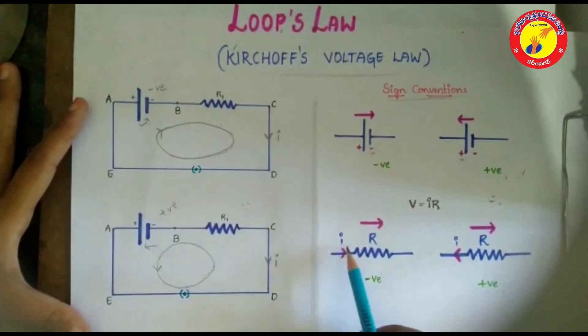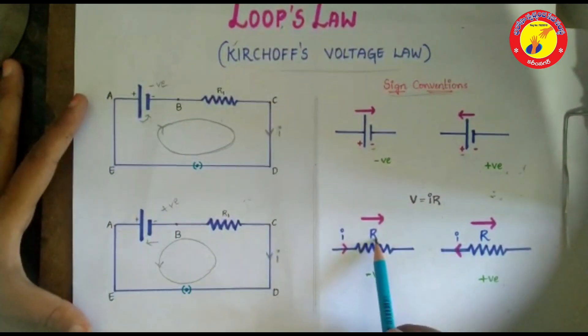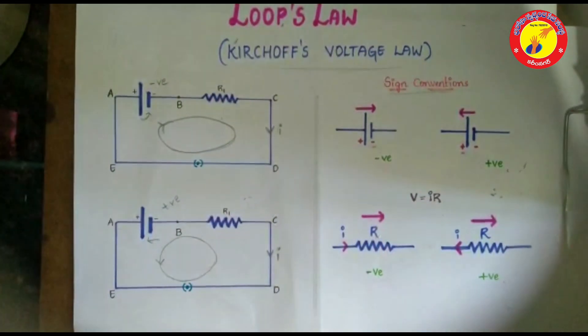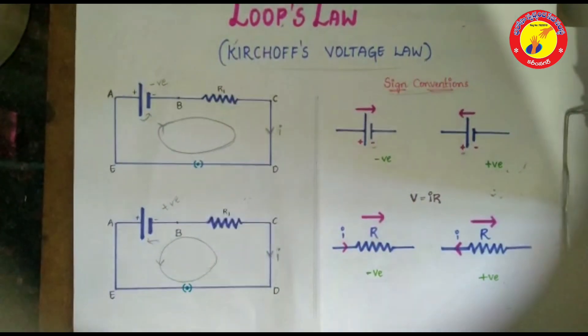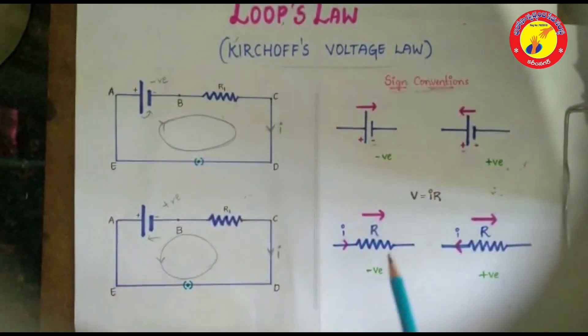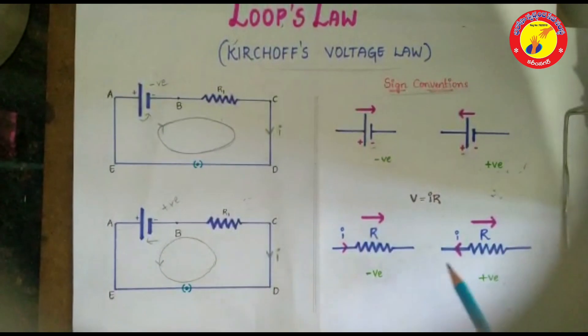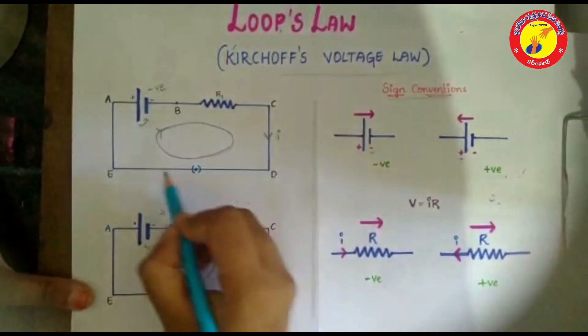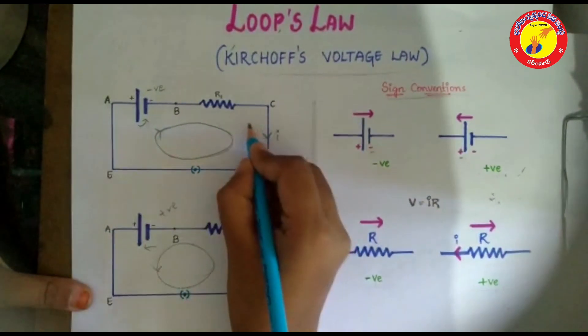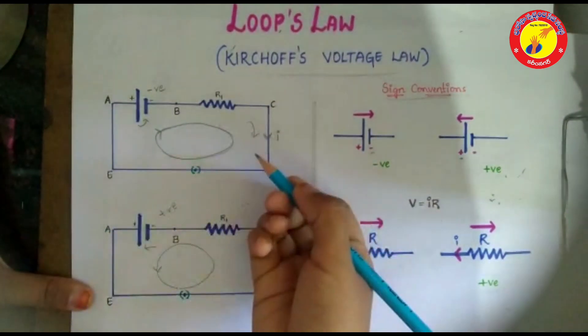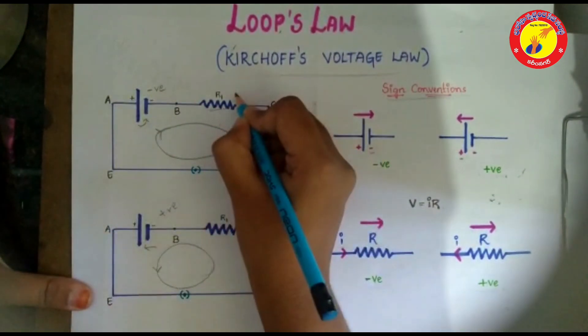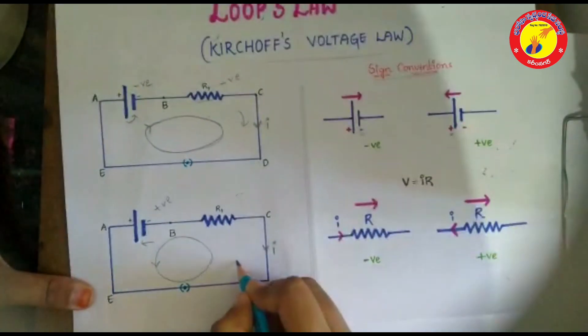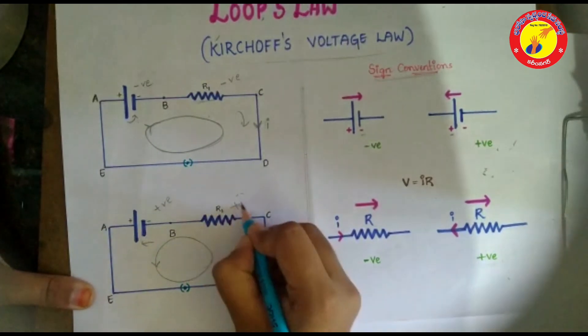Consider I current as your friend and R resistor as restaurant. When you go to a restaurant with your friend, you will pay more bill and that is negative. And when you go alone without your friend, it is positive. Likewise, in a loop, when you are moving along the direction of current through a resistor, the potential difference is negative. And when you are moving against the direction of current through a resistor, it is taken as positive.